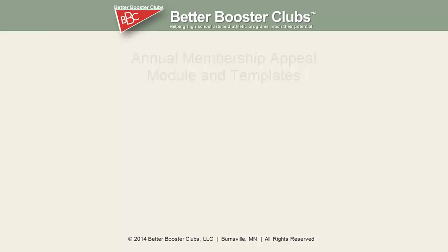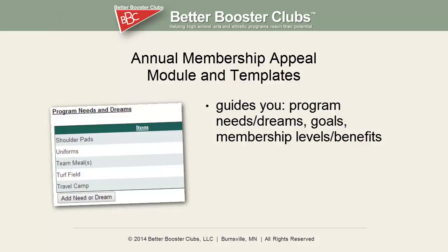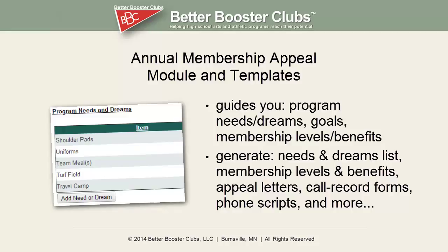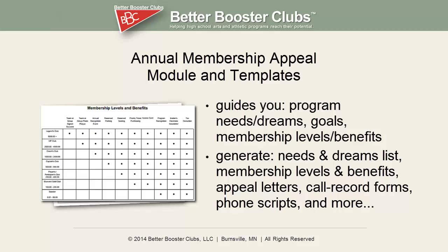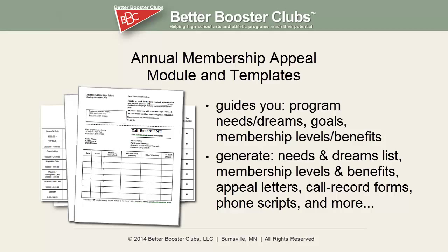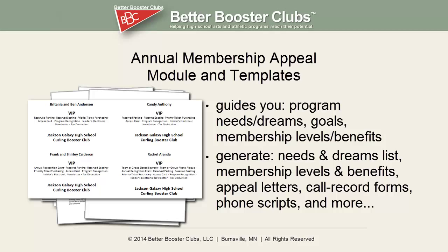The database also includes our annual membership appeal module and templates. Let our database guide you in identifying, describing, quantifying, and even prioritizing your program needs and dreams. Use it to help set goals and establish a very effective membership program in terms of levels and benefits. With the push of a button, generate a needs and dreams list, a membership levels and benefits flyer or brochure, targeted personalized membership appeal letters, call record forms and phone scripts for a follow-up phone-a-thon, personalized follow-up letters, and even personalized thank you letters and customized membership cards.